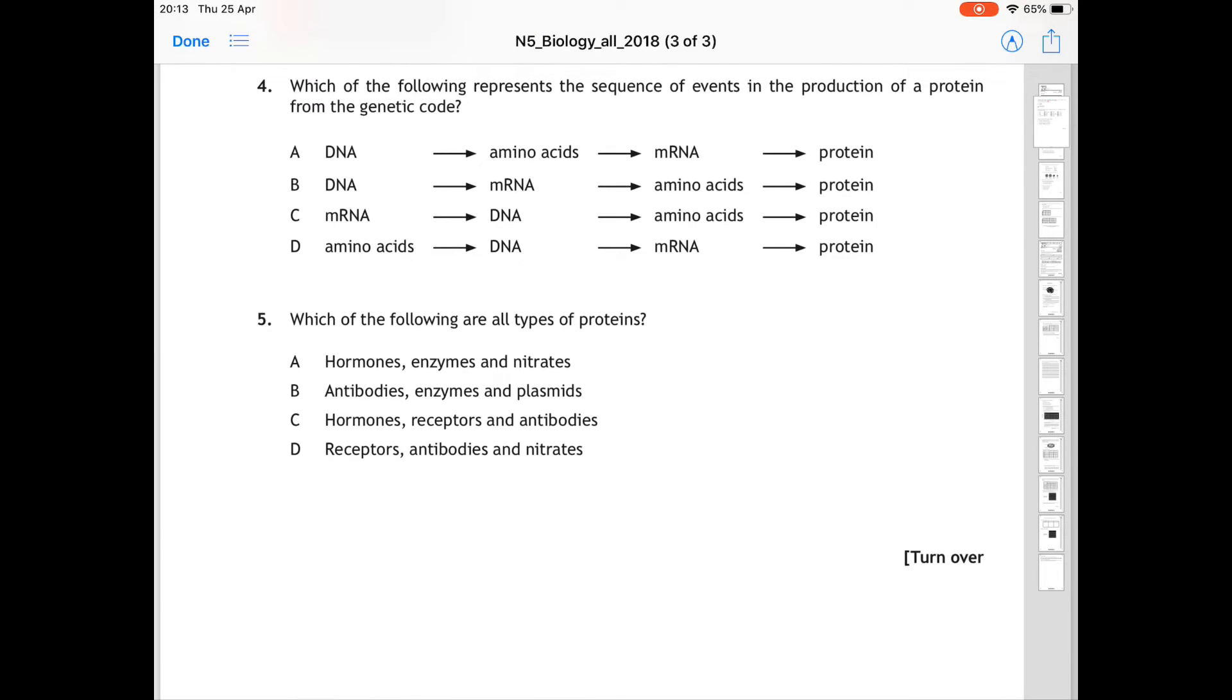For question 4, which of the following represents the sequence of events in the production of a protein from the genetic code? So we're looking at protein synthesis. You should remember that DNA then comes into mRNA, mRNA goes to the ribosome, where we have amino acids, and finally the production, the synthesis of proteins. So DNA, mRNA, amino acids, and protein is question or answer B.